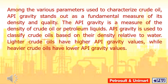Among the various parameters used to characterize crude oil, API gravity stands out as a fundamental measure of its density and quality. API gravity is a measure of the density of crude oil or petroleum liquids, and is used to classify crude oils based on their density relative to water. Lighter crude oils have higher API gravity values, while heavier crude oils have lower API gravity values.